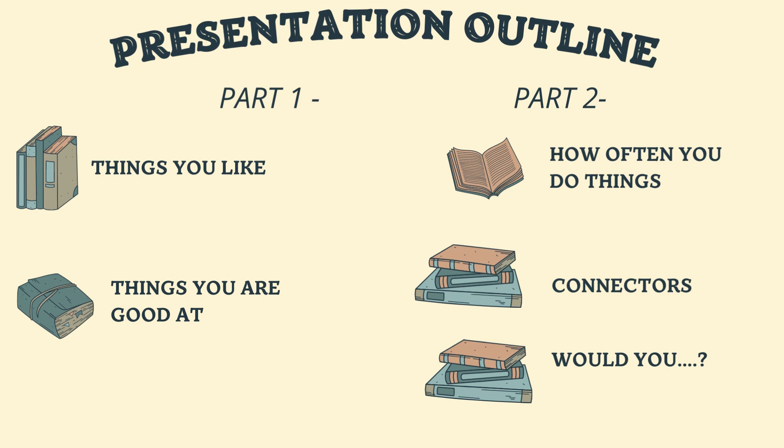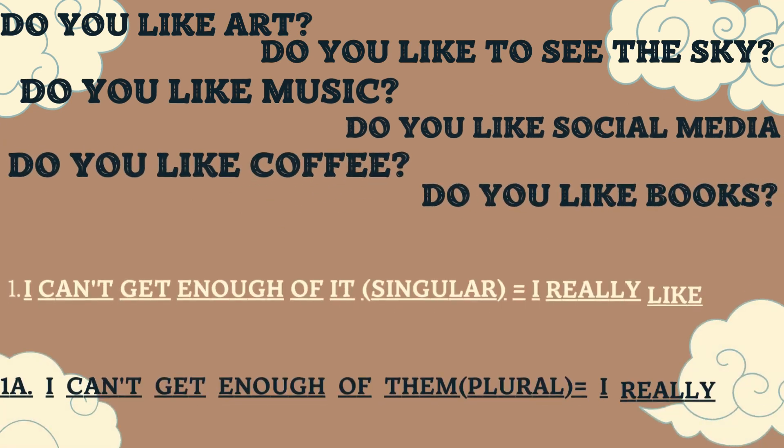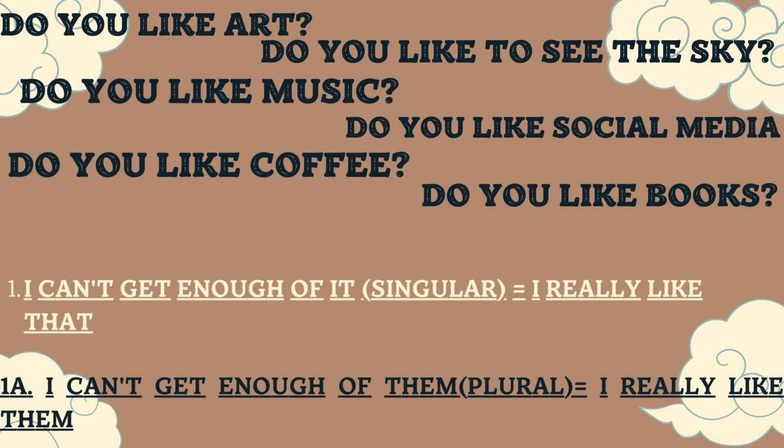For the topic of things you like, example questions include: 'Do you like coffee?', 'Do you like tea or coffee?', 'Do you like reading books?', 'Do you like to see the sky?' One simple answer is 'Yes, I do' or 'Yes, I love it.' A much better phrase to use is: 'I can't get enough of it' — for singular things — or 'I can't get enough of them' — for plural things.